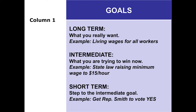Column one is Goals — here we define what we want to win. We're talking about raising the minimum wage. We've got this thing we're fighting for: $15 an hour. And if we think long term, that's leading towards a livable wage for all workers. We want to keep that long-term goal in mind because we're really not just fighting for 15 bucks an hour. And a short-term step would be to get Representative Smith to vote yes if we're trying to pass this in the state legislature.